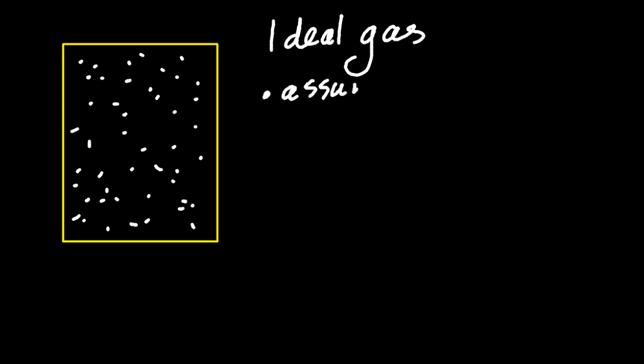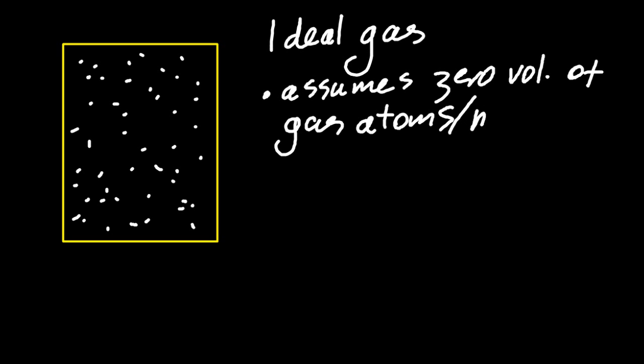So let me draw out an ideal gas. Well, there's no such thing as a real ideal gas, it doesn't exist in the real world, but the equation still works quite well. Some things you need to know about this ideal gas is that the equation assumes zero volume of gas. Now that's the atoms and the molecules themselves that has zero volume.